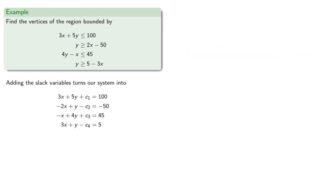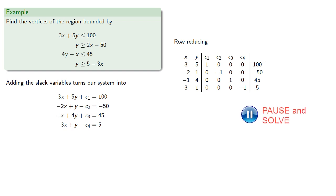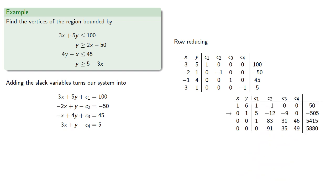So we can rewrite our augmented coefficient matrix. We can row-reduce. And to make it a little easier to see what we're doing, we'll translate our row-reduced form back into a system of equations.